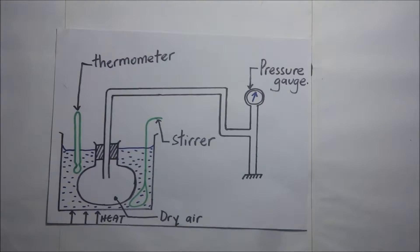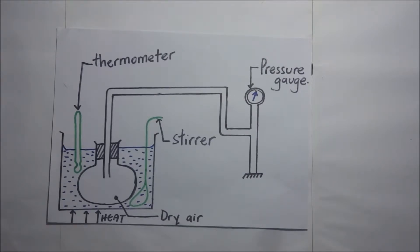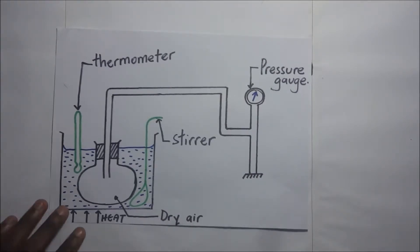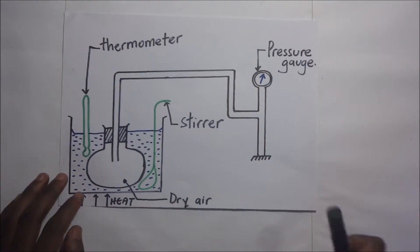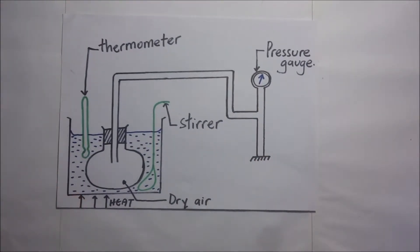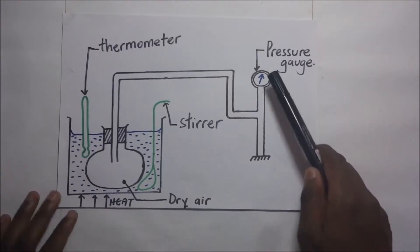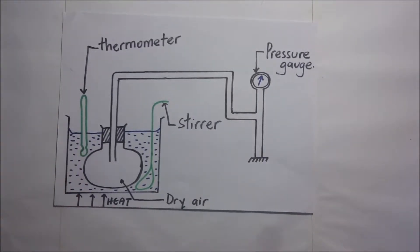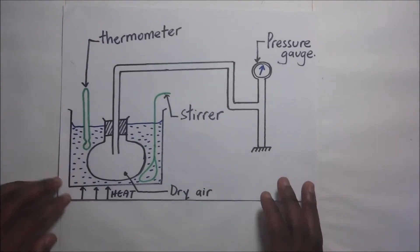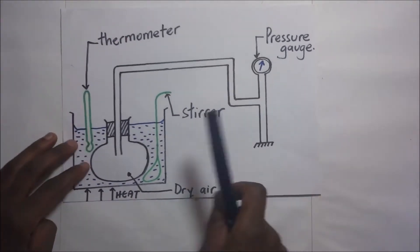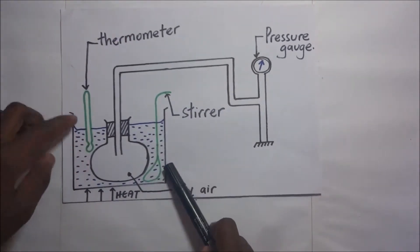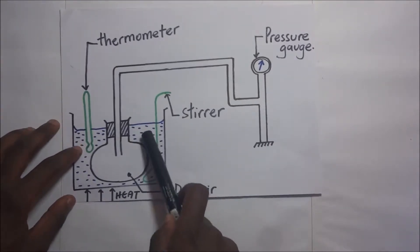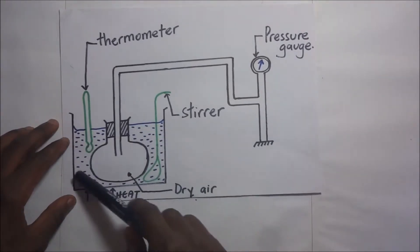We'll now describe the experiment to verify the pressure law. The pressure law states that the pressure of a fixed mass of a gas is directly proportional to the absolute temperature. Looking at this experimental setup, what we are trying to investigate is the relationship between pressure and temperature of a gas. We have a thermometer here and a stirrer,